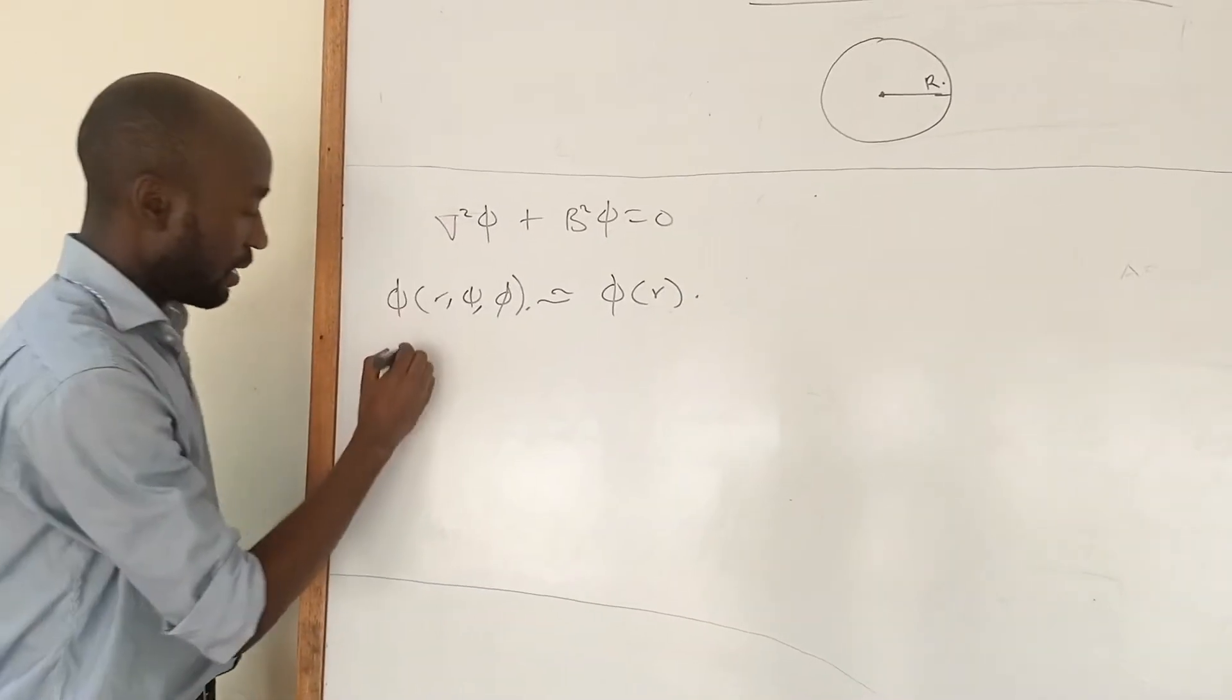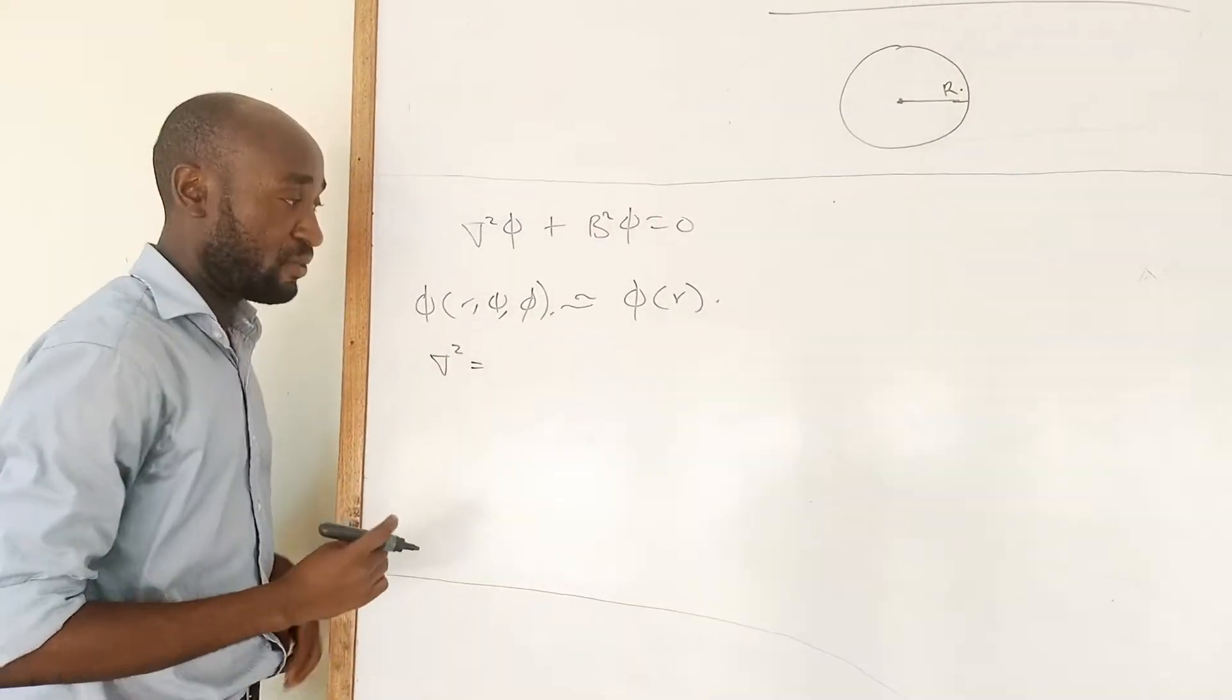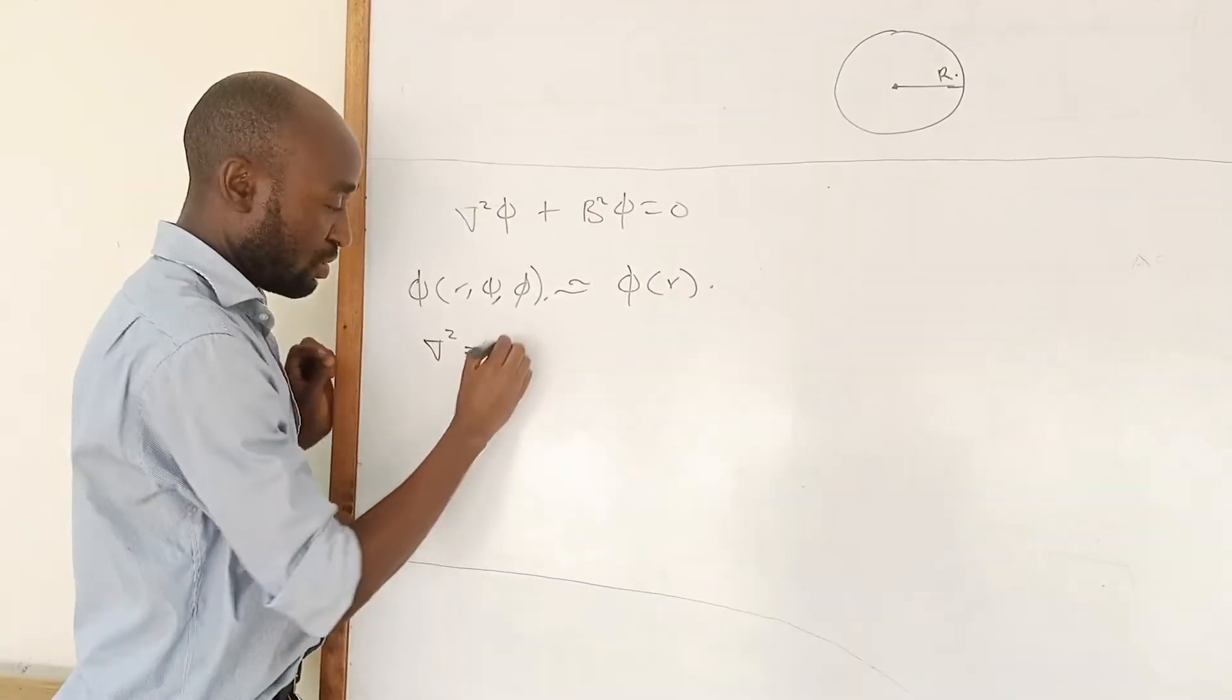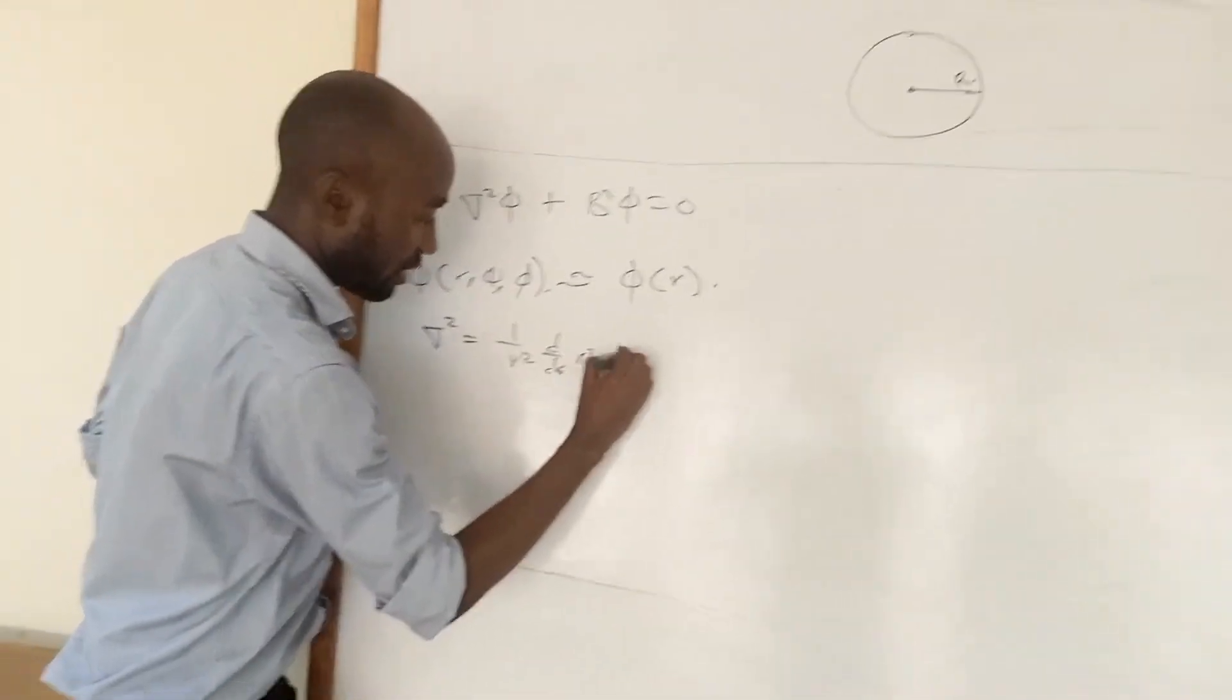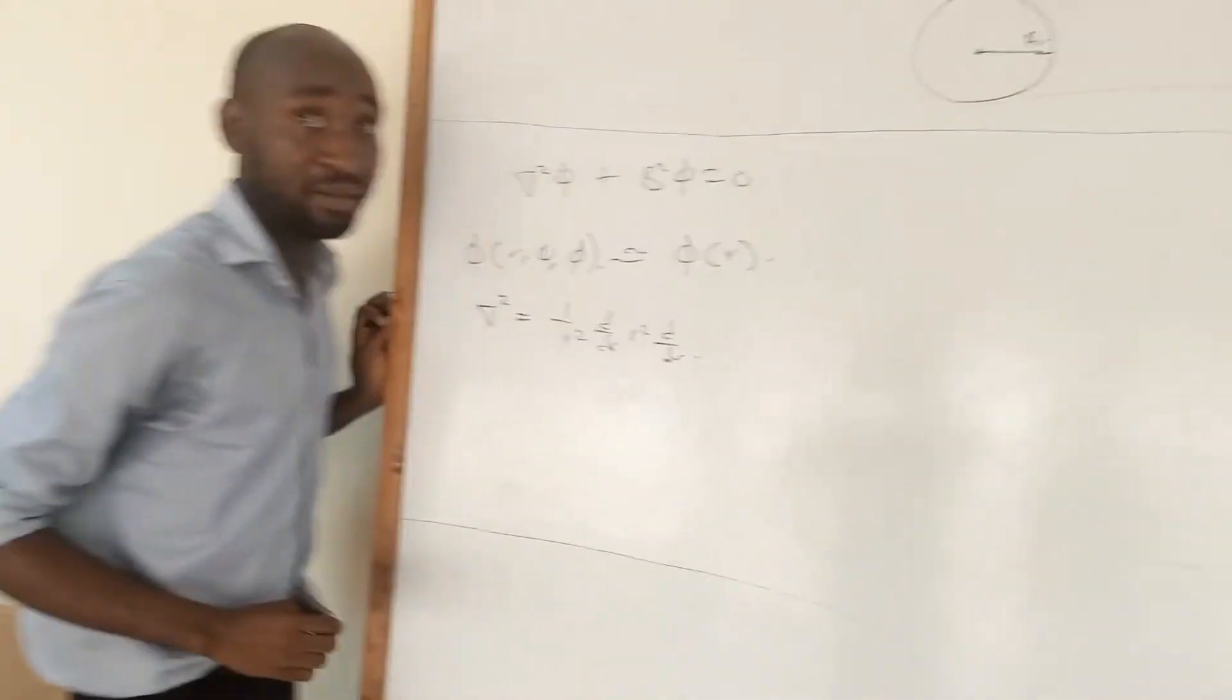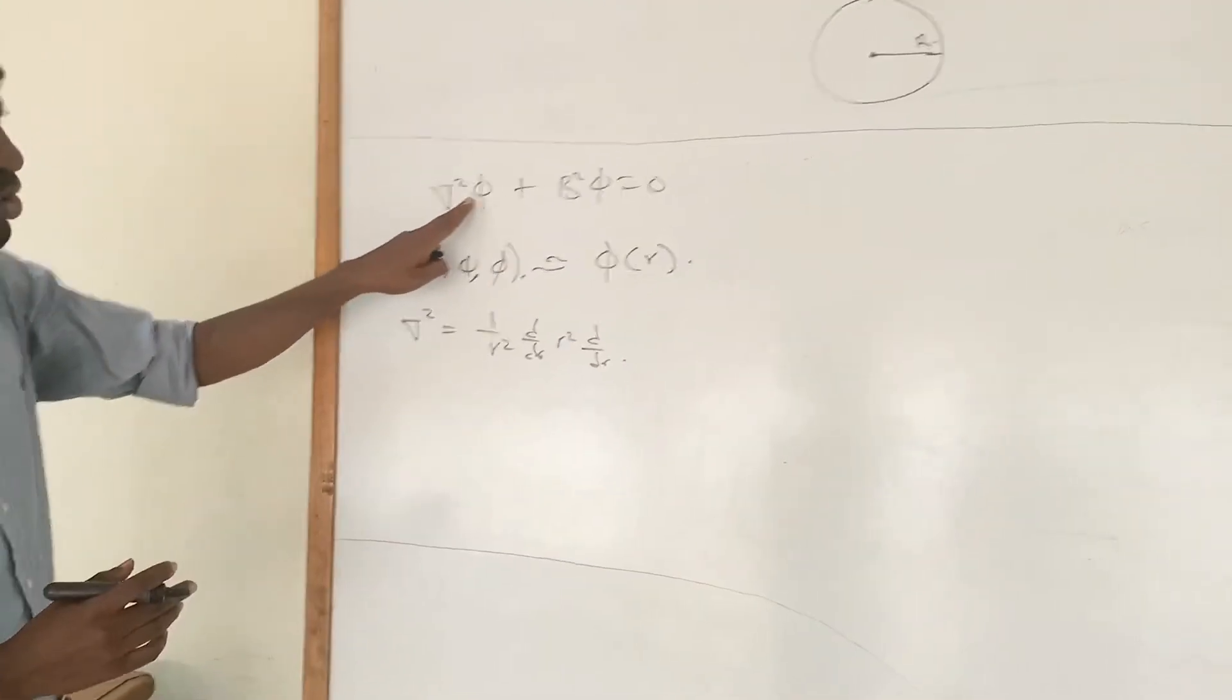In the spherical case, the Laplacian will just be in terms of R. It will be 1 over r squared d over dr r squared d over dr.